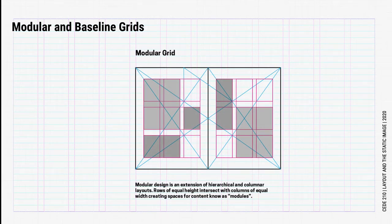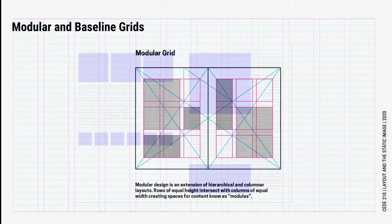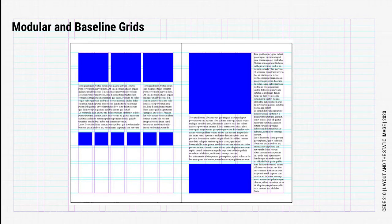Modular design extends hierarchical grids by adding more horizontal elements. Rows of equal height intersect with columns of equal widths, creating spaces for content known as modules. You can use a single module or groupings of modules known as a spatial zone or a field. These modules are often square and tie together vertical and horizontal proportions.